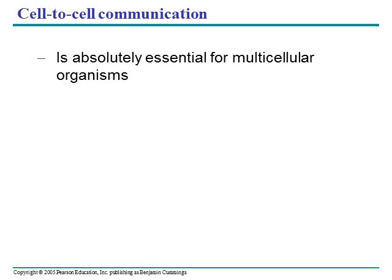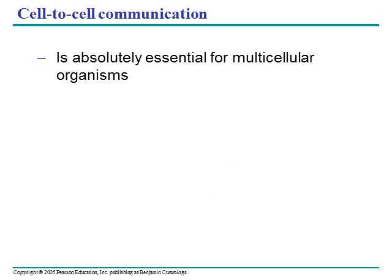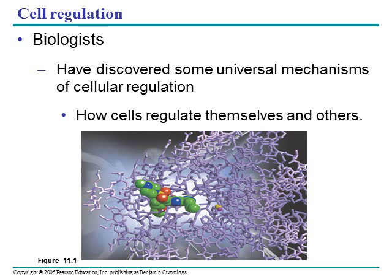When we talk about cell communication, we're talking about cells communicating, and it's absolutely essential for multicellular organisms. Our toe cells need to be able to communicate to our brain that we're moving, or maybe we've stepped on a sharp rock. That communication can only happen if our cells are talking to each other. Biologists have discovered that there are universal mechanisms for how cells regulate and communicate, whether in bacteria, amoeba, or chimpanzee cells — all cells are doing this, and it's been a big research area.